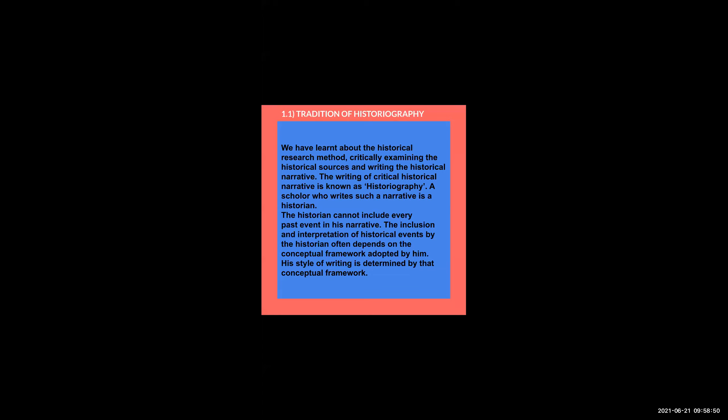The first point of our chapter is 1.1: Tradition of Historiography. We have learned about the historical research method — critically examining the historical sources and writing the historical narrative. Whatever the sources, whether written or oral, we have to critically examine them and then write the historical narrative. The writing of such a critical historical narrative is known as historiography, and a scholar who writes such a narrative is known as a historian.